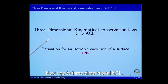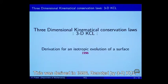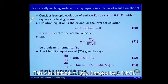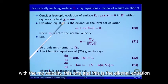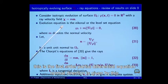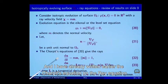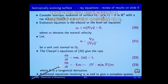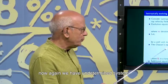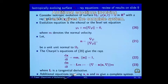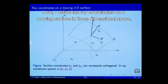Now I go to three-dimensional KCL, derived in 1996. Consider isotropic motion of the surface omega t in R^3 with the given ray velocity. This is the kinematic and this is the iconal equation — a first order partial differential equation. The normal velocity and normal direction are given accordingly. The Charpit's equations and the ray equations give: dx/dt = mn and dn/dt = -L(mn), where L is the tangential derivative operator. Again, we have an underdetermined system. An additional equation involving x, t and n gives the complete system.